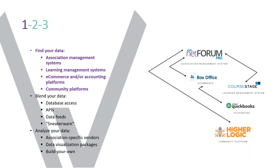Let's talk about what you really need to do to have a data project that succeeds. There are three things: find your data, blend it, and analyze it. Examples of where you might find your data: AMSs, LMSs, e-commerce or accounting, community platforms. Don, where else have you seen associations get their data from? You're thinking about any type of engagement — a benefits program, your e-marketing platform, unsubscribes, bounce backs. The 4As had a custom research database with requests tracked. Google Analytics data is another big one. Advocacy, certification — there's a long list. Any way for your particular association that translates to engagement.